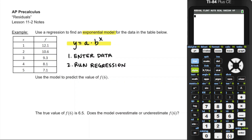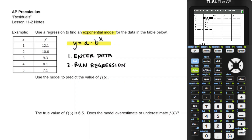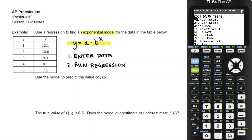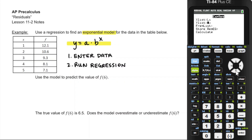First, we're going to get into the lists. We go to Stat, then choose Edit so we can edit the lists and enter all of our data. Once we're done with that, we go back to the Stat menu and calculate our regression equation. We're going for an exponential regression, so we go down to the bottom — that's choice zero. The x-list was List 1 and the y-list was List 2, no frequency list. We'll store the regression equation into Y1 and then calculate.